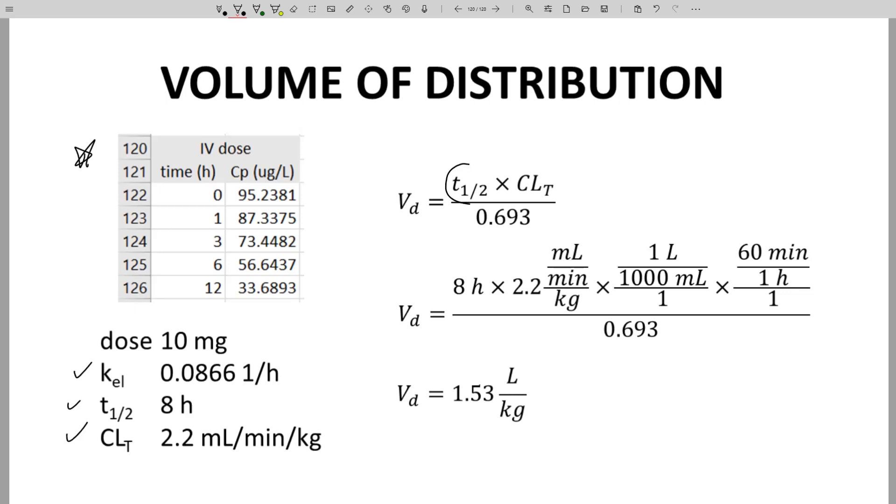From half-life and clearance, we can derive volume of distribution. Units are always a challenge of pharmacokinetic parameters. Watch your units and conversions. The units for Vd are liters or more preferred liters per kilogram patient mass. So the molecule that fits these data has a Vd of 1.53 liters per kilogram.